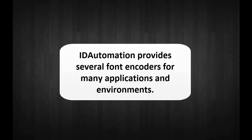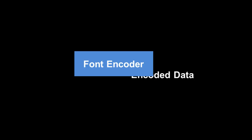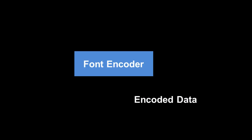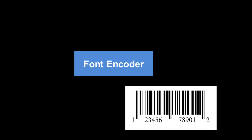Let's look at an example of the encoding process. Data is passed to the font encoder and the output will be encoded text. Applying the barcode font to the encoded text will produce a scannable barcode.